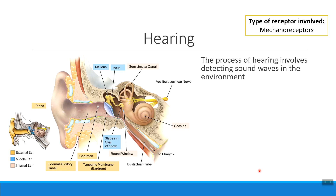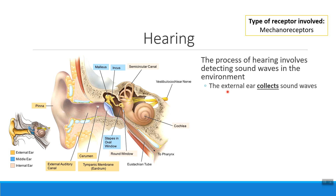When we talk about the process of hearing, what we're actually detecting is sound waves from the environment. Remember in the process of vision, we detected light waves. In hearing, we're detecting sound waves. Now there are three parts of your ear that are each involved in the process of hearing. We start with the external ear, first made of this outer structure called the pinna, and then transitioning into the external auditory canal, which is the part of your ear that collects sound waves from the environment. Think of the external ear kind of like a funnel.